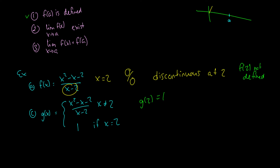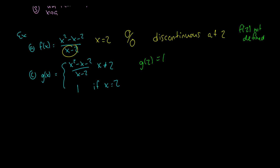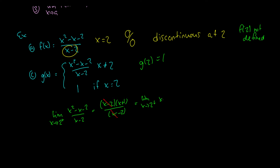Does the limit exist? We take the limit as x approaches 2 from the right of x squared minus x minus 2 over x minus 2. Factoring the numerator gives x minus 2 times x plus 1 over x minus 2. The two x minus 2 terms cancel, so we get the limit as x goes to 2 from the right of x plus 1, which equals 3. And the limit coming from the left is also equal to 3.